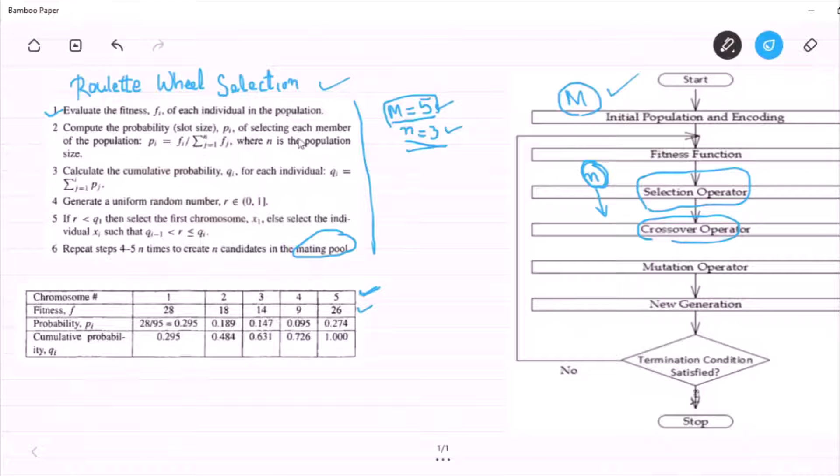Compute the probability of each member of the population. How to calculate the probability? First, we have to add these things. 28 plus 18 plus 14 plus 9 plus 26 equal to 95.